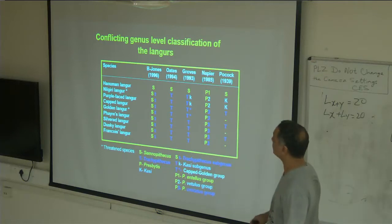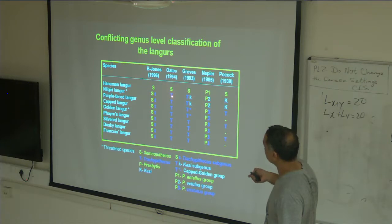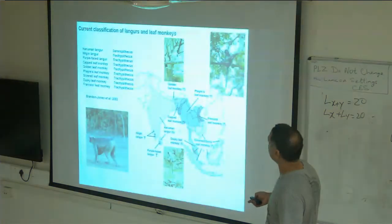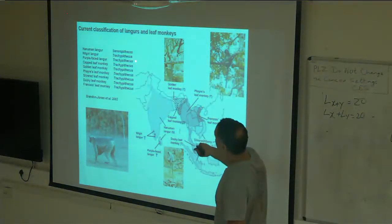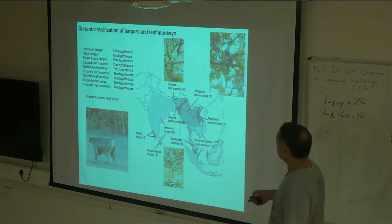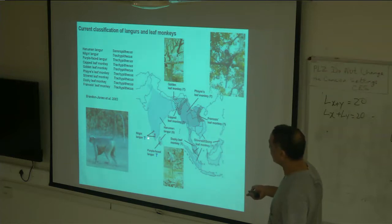The Hanuman langur was assigned a different genus name compared to the other species. If you look at these two classification schemes, Hanuman langur is in Semnopithecus, whereas the rest are all in the genus Trachypithecus. In peninsular India and Sri Lanka, we have two species of Trachypithecus: the Nigri langur and purple-faced langur.